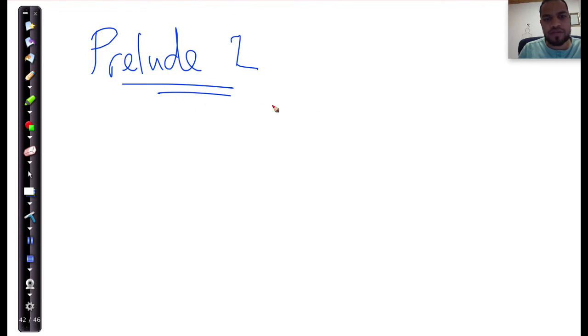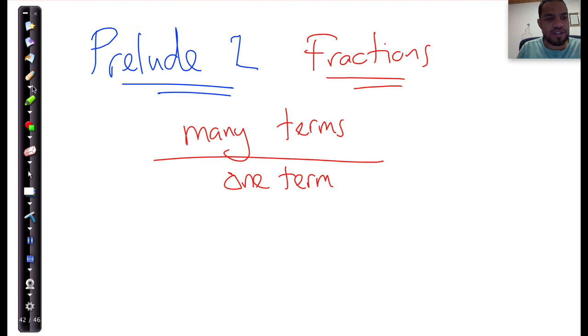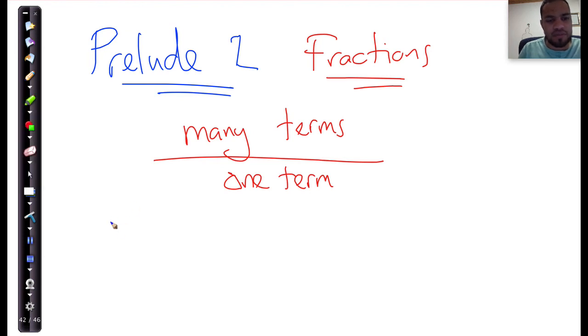Prelude 2 is going to talk about fractions. Now, a fraction is easy to simplify if you have many terms over one term. Whenever you have many terms over one term, that's a very easy situation, because if I had to take the example of 2 plus 1 over 3, you can say that's just 3 over 3.